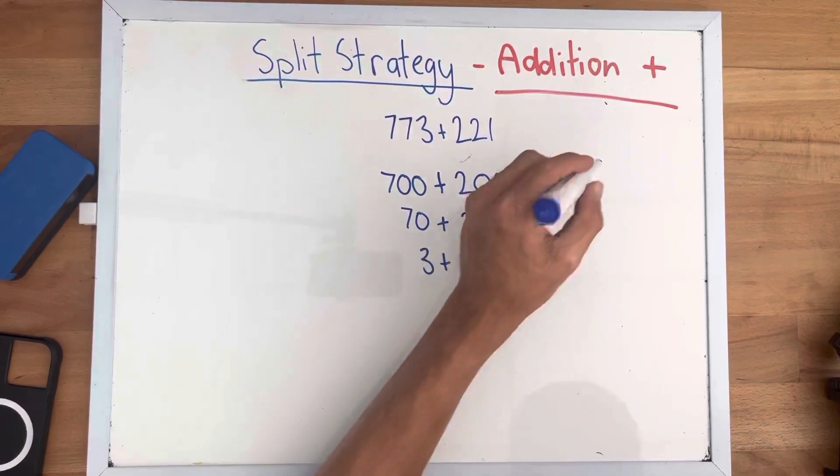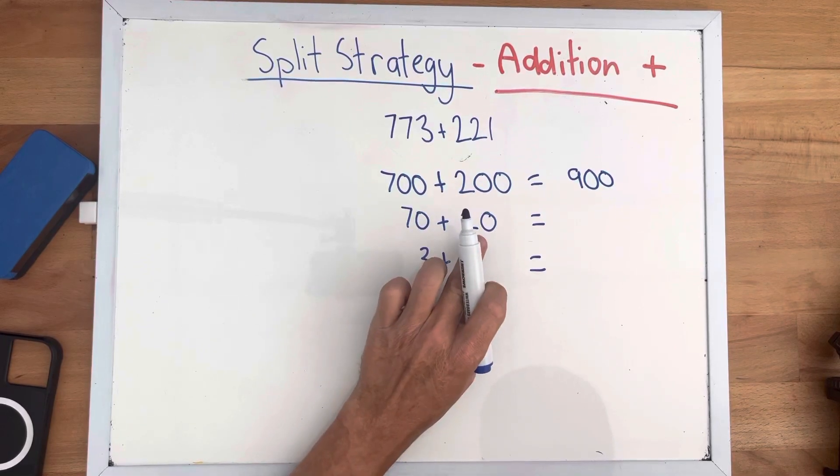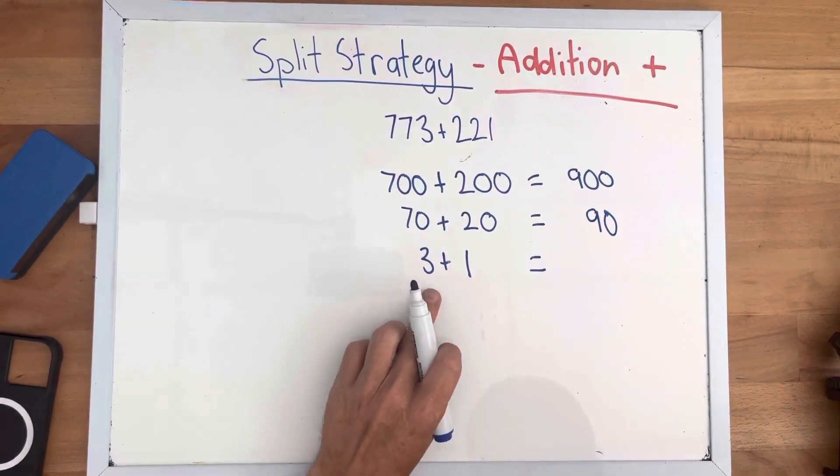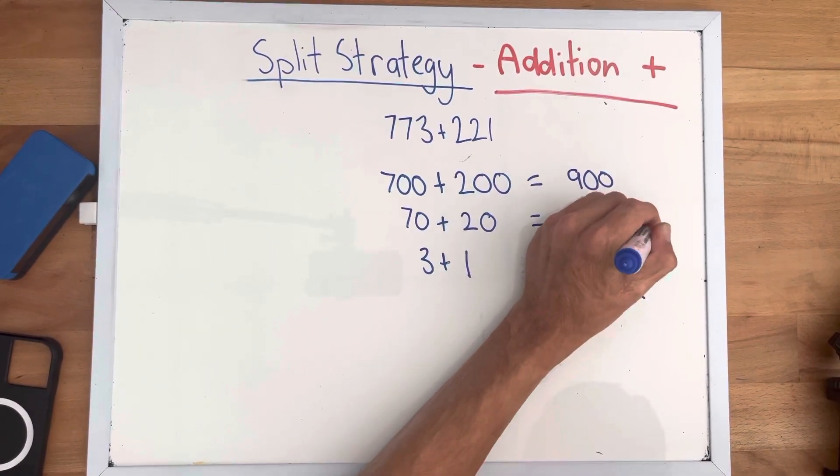700 plus 200 equals 900. 70 plus 20 equals 90. 3 plus 1 equals 4. Now we add all those together.